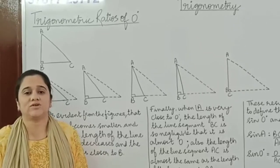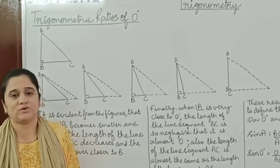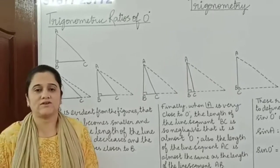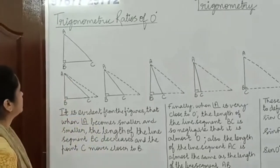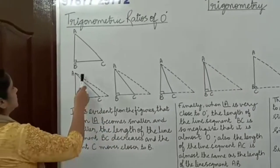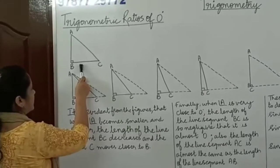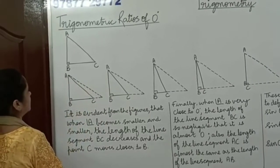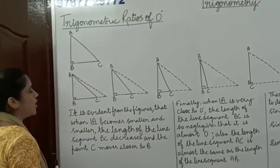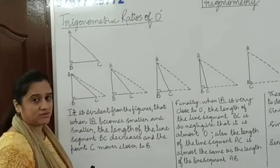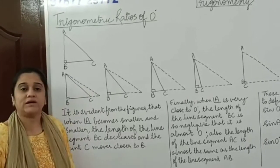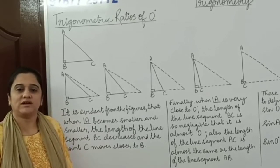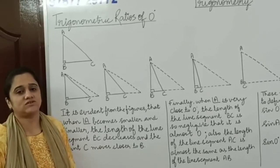Let's understand the trigonometric ratios of angle 0 degrees using a right triangle. Here we have a right triangle ABC with the right angle at B. Let's understand what happens when angle A becomes smaller and smaller till it becomes 0 degrees.